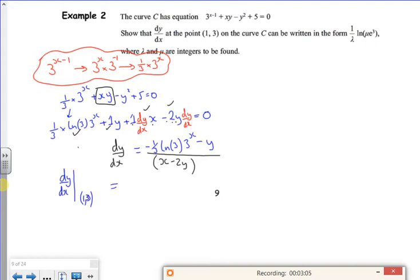If I put my x as one, I've got -(1/3)log(3)·3^1 - 3 for the y values, all over 1 - 2(3).